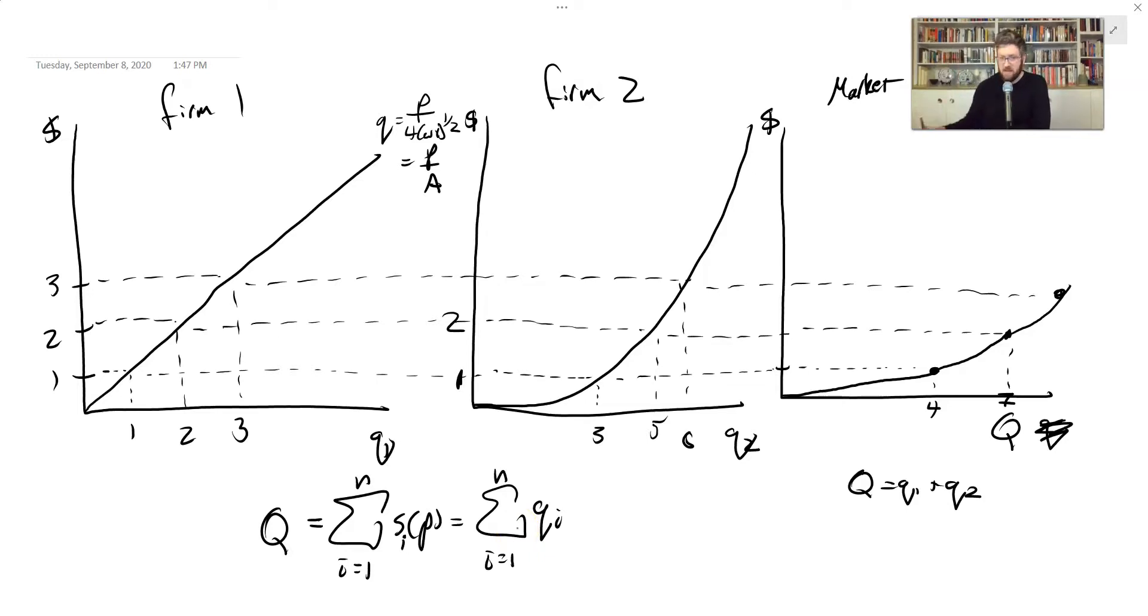One mistake sometimes people make is they get to the point where price equals marginal cost and they forget to solve for Q. And instead of adding up all the queues, they add up all the prices. And that's like adding these things vertically. That doesn't make sense. We need to add the quantities together to get the amount that the whole market is supplying.